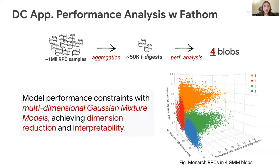This discovery inspired us to model bottleneck constraints experienced by applications with multidimensional Gaussian mixture models, offering two primary advantages. Firstly, it signified a substantial dimension reduction from 50k T-digests to just four distinct blobs. Secondly, even within those four blobs, we were able to effectively characterize RPCs based on their performance metrics and categorical attributes. This level of interpretability enhances our capacity to gain insight from the data, offering a promising avenue for further analysis and improvements.